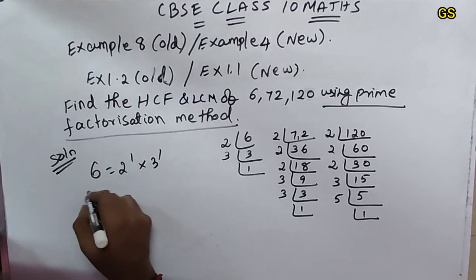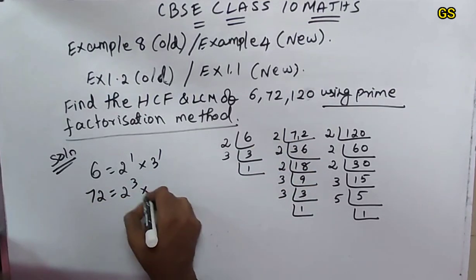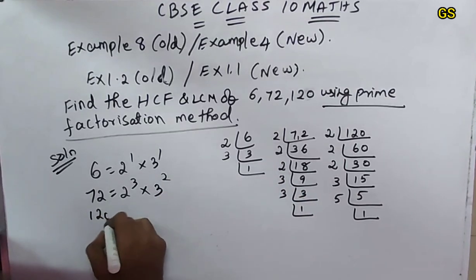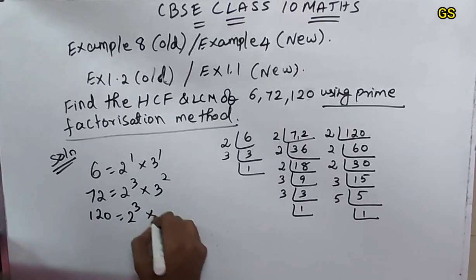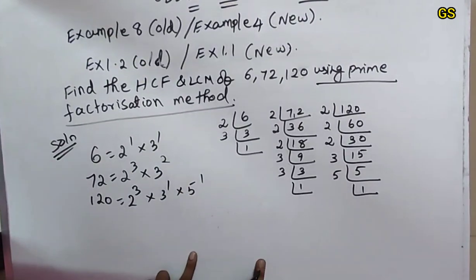So 6 is 2 to the power 1 into 3 to the power 1. 72 is 2 to the power 3 into 3 to the power 2. Next 120 is 2 to the power 3 into 3 to the power 1 into 5 to the power 1.